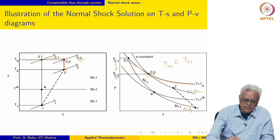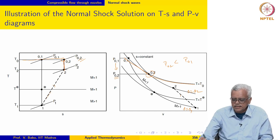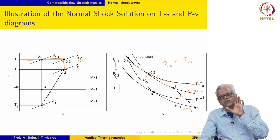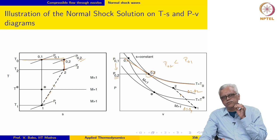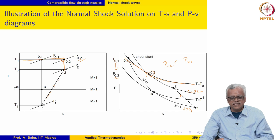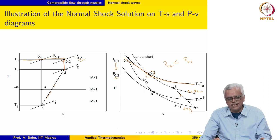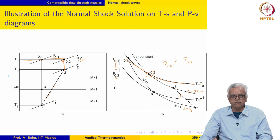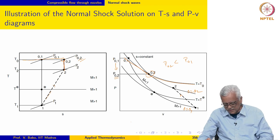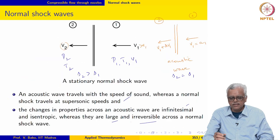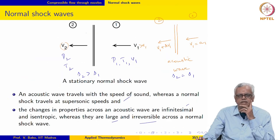We have connected state 1 and state 2 with a dashed line, but there is really no process path connecting them. It is a wave solution — we have state 1 and state 2, and the process connecting them is irreversible. We do not know how the two are connected; it is discontinuous, and the flow jumps from state 1 to state 2.